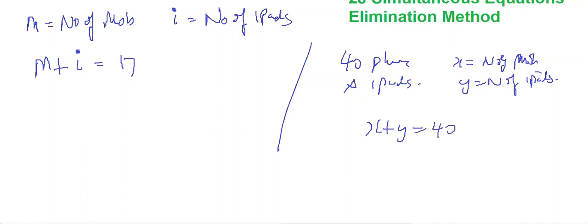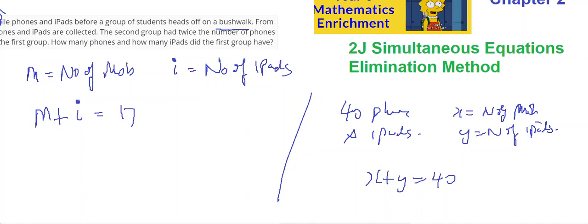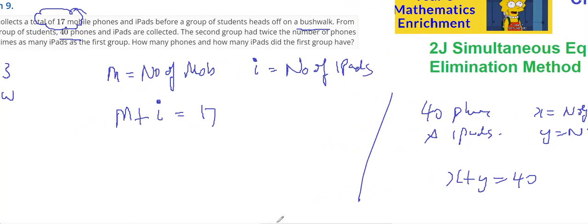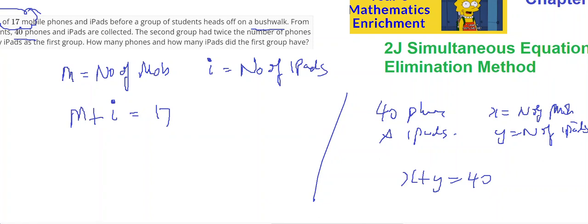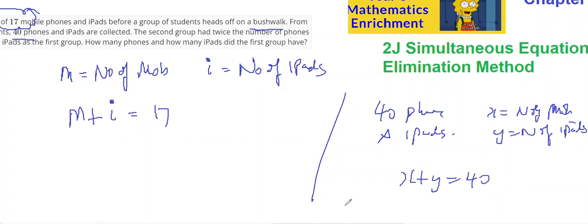And what else do I know? So, had twice the number of phones as the number of iPads, and three times the number of iPads. So, the number of phones, X equals twice the number, so 2M, and Y equals 3I.